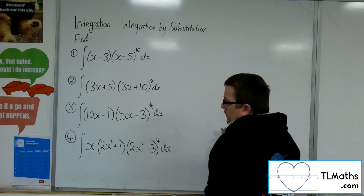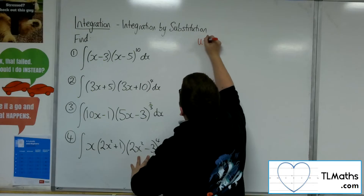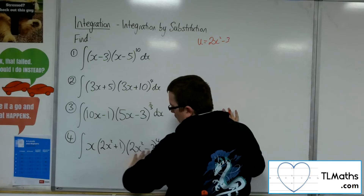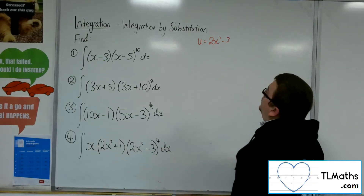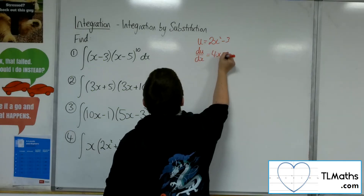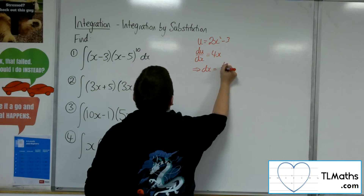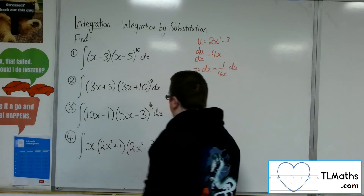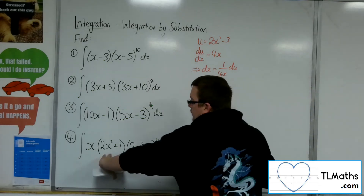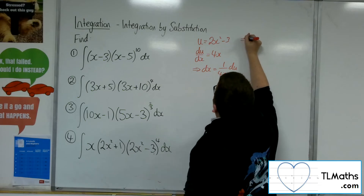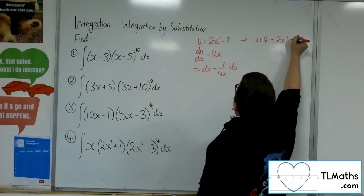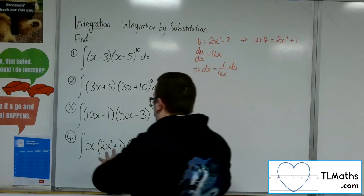Number 4. The u is going to be 2x squared minus 3 — we're going for the most complicated-looking one. So u equals 2x squared minus 3. du by dx will be 4x, so rearranging, dx will be 1 over 4x du. Now I've got the 2x squared plus 1: I could add 4 to both sides, so u plus 4 must equal 2x squared plus 1. So I've got a replacement for that.